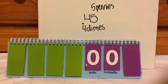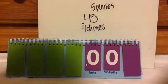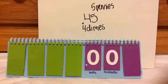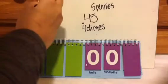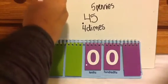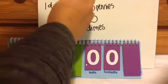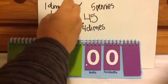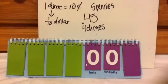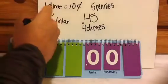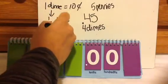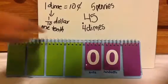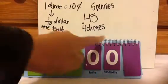When I tell them about dimes, I ask: how many dimes does it take to make a dollar, or what is a dime worth? They explain that 1 dime is 10 cents, and 1 dime is like 1 tenth of a dollar, because it takes 10 dimes to make 1 dollar. So when you have 1 dime, you have 1 tenth of a dollar.